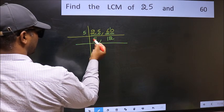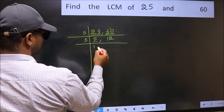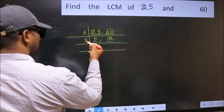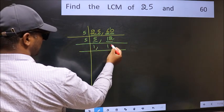Now here we have 5. 5 is a prime number, so 5 times 1 is 5. The other number, 12, is not divisible by 5, so you write it down as it is.